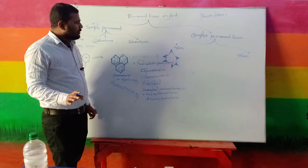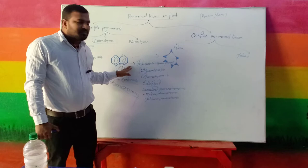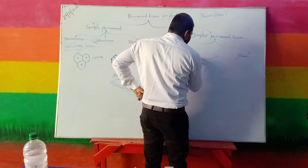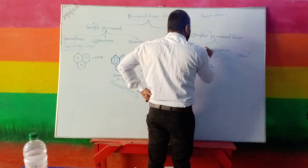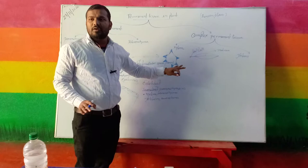The features of collenchyma tissue: cells will be living. Vacuole may be present or absent. The intercellular space will be absent. Collenchyma tissue is present in the petiole, mid veins of a leaf, and calyx. Generally, collenchyma is found in dicot plants and is absent in monocot plants.